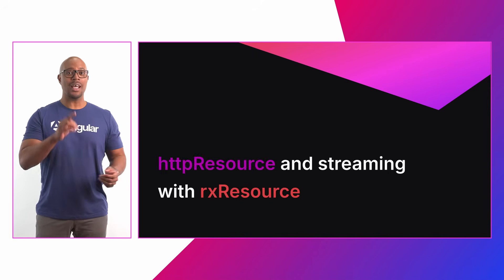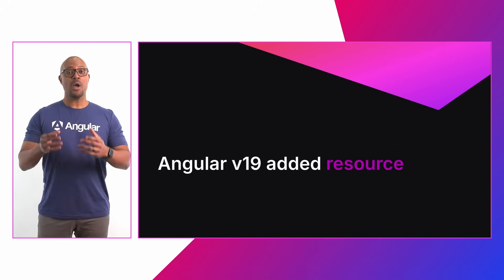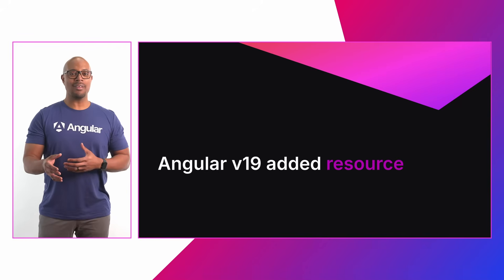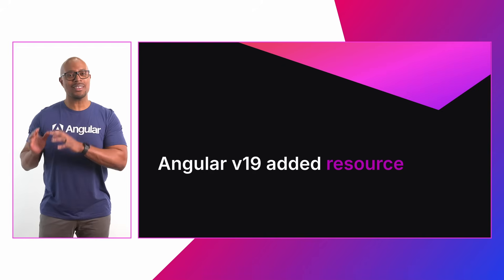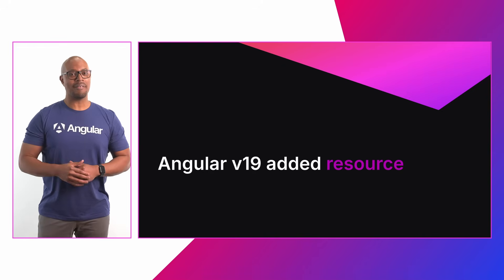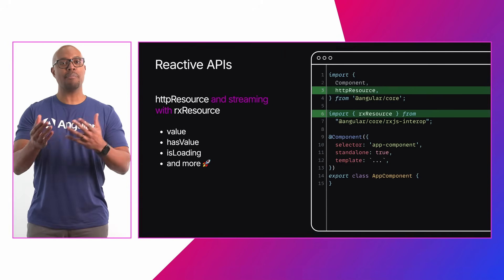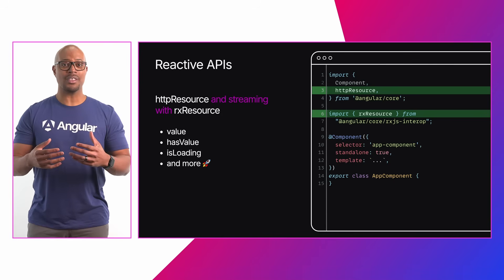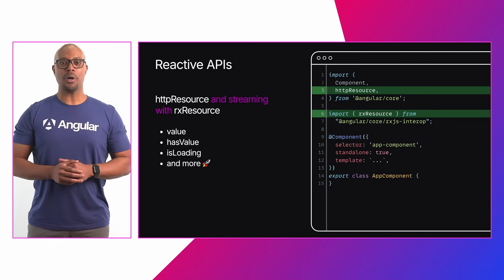That's HTTP resource and response streaming with Rx resource. In Angular v19, we released an experimental resource API for building asynchronous reactive applications, empowering developers to perform asynchronous tasks like data fetching. The resulting data is then available via familiar signal APIs, with some added bonuses including properties such as value, has value, is loading, and more.